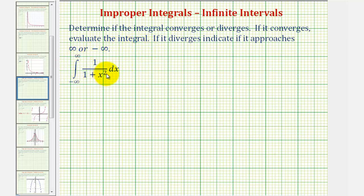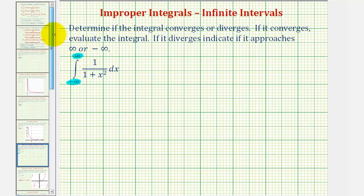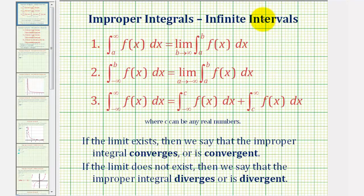Looking at the integral, notice how the lower limit of integration is negative infinity and the upper limit of integration is positive infinity. For a quick review, because we have an infinite interval on the interval from negative infinity to positive infinity, we're first going to write the integral as two separate integrals by breaking it up using a constant c — any constant between negative infinity and positive infinity. Then once we have these two separate integrals, we'll write them using limit notation, as we see above.